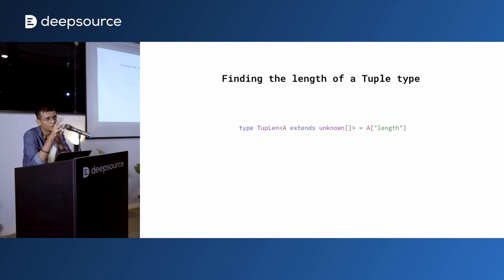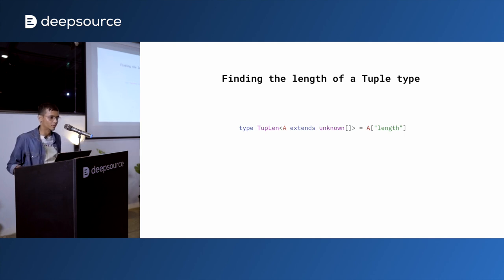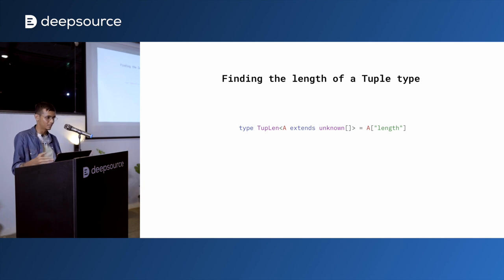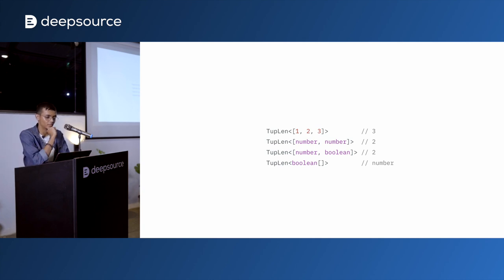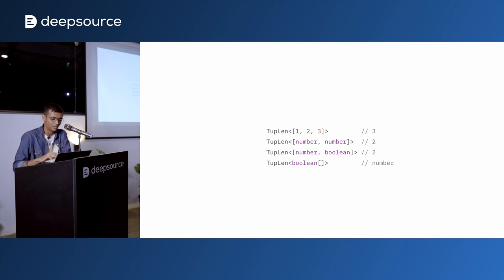Starting with finding the length of a tuple type. TupLen takes an array type A extends unknown[] and reads out the length property. If you call TupLen on a plain Boolean array, it gives you the type number since the length of any array is number. But if you use tuples, it gives the actual length, because TypeScript tuples have a restriction that they can only contain a fixed number of items. So TupLen<[1, 2, 3]> correctly infers the length as 3.